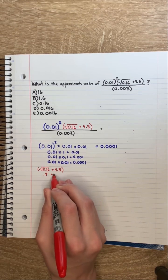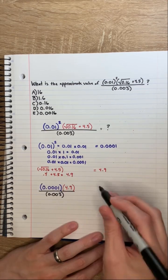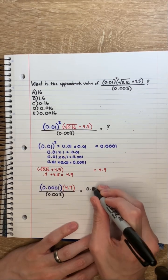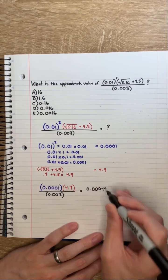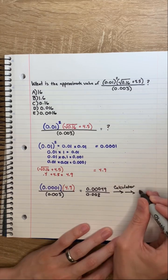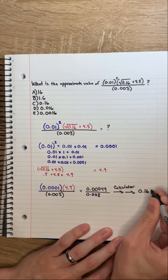0.4 plus 4.5, which equals 4.9. So this top part becomes 0.0001 times 4.9, which gives 0.00049. Divided by 0.003, which will give us 0.163.